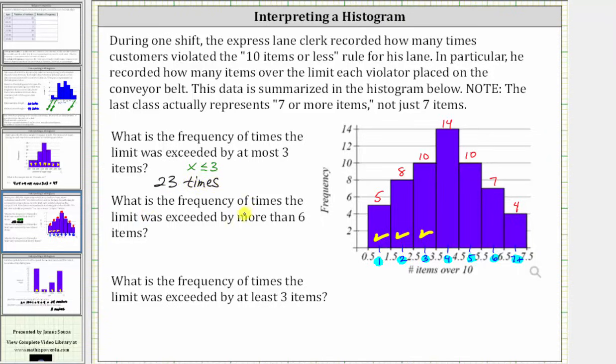Next, what is the frequency of times the limit was exceeded by more than six items? If x is the number of items over the limit, exceeding by more than six items is when x is greater than six. The only class greater than six is the class of seven or more, with a frequency of four. Therefore, the number of times the limit was exceeded by more than six items was four times.